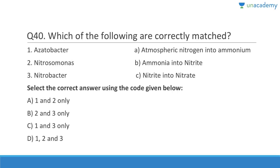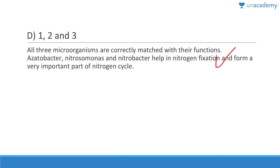Azotobacter converts atmospheric nitrogen into ammonia. Nitrosomonas converts ammonia into nitrite. Nitrobacter converts nitrite into nitrate. Answer is D, one, two, and three. These organisms are a very important part of the nitrogen cycle. Thank you for watching this lesson.